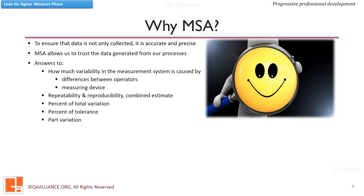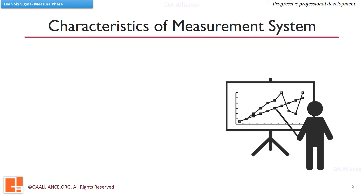We want to have our observations as close to the true value as possible. MSA thus enables us to take appropriate and timely actions in case the measurement system is having a large contribution in the process variation. No matter how well the people are trained, it's likely for them to vary in collecting data, while tools and devices are known to degrade over time. Thus we need to take this variation into account. Part of the measurement plan should include ways to maintain data sanity.